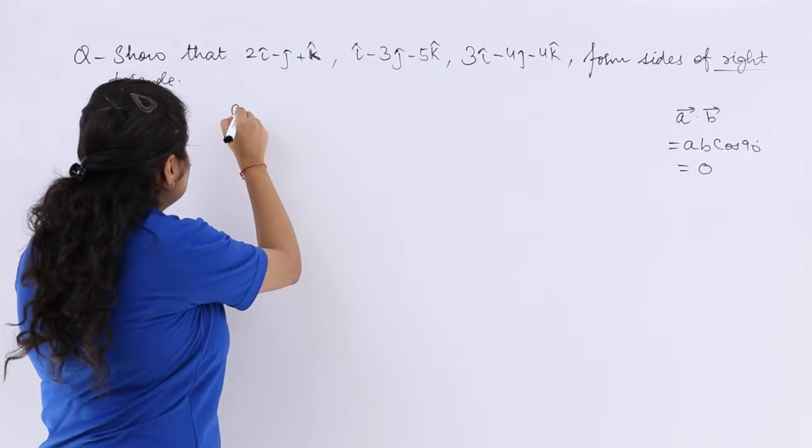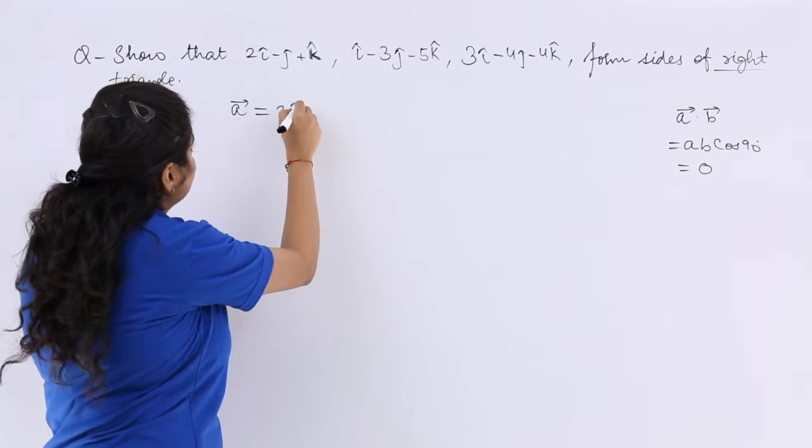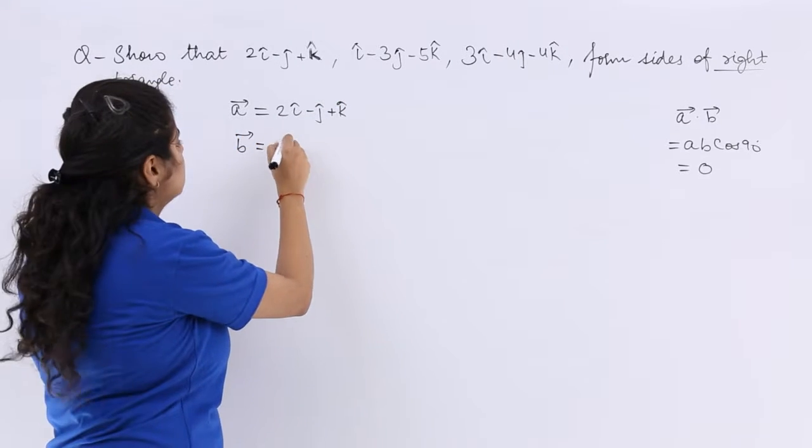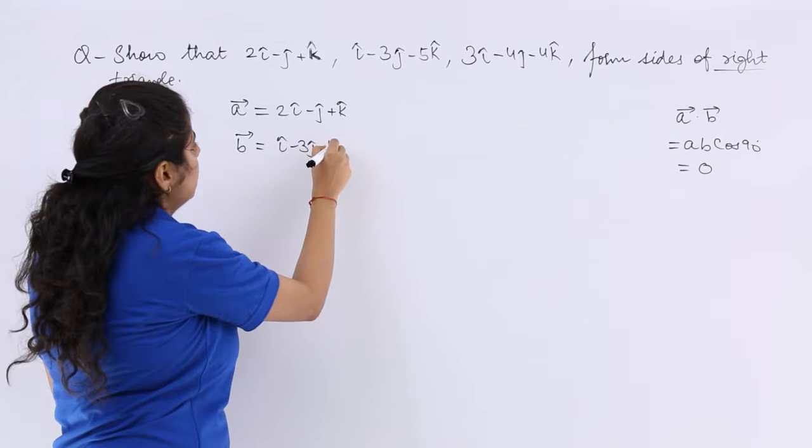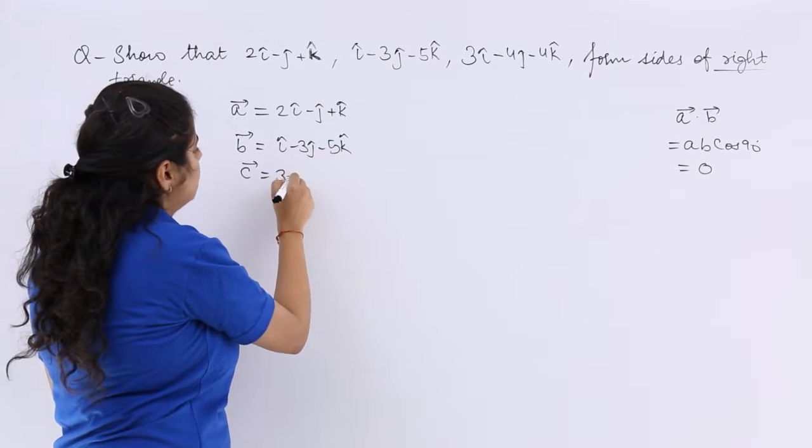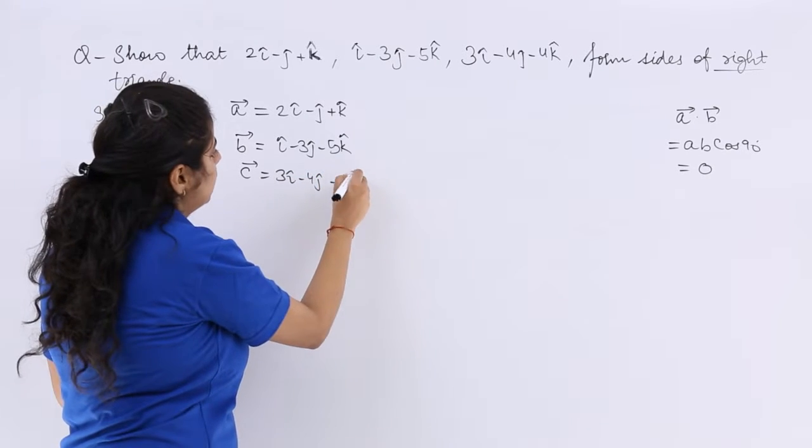I can name these as individually A vector, B vector i-3j-5k, and C vector 3i-4j-4k.